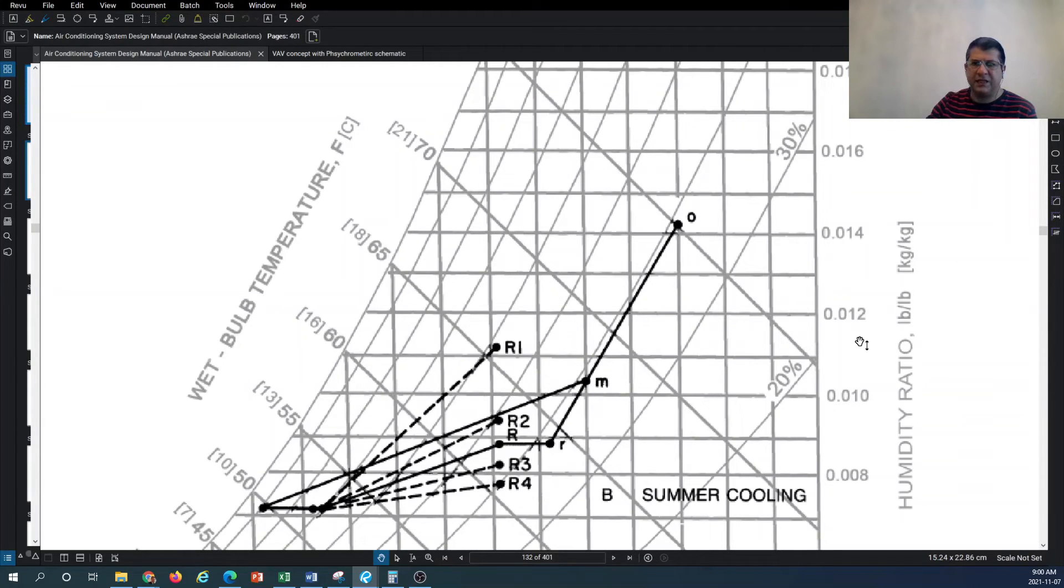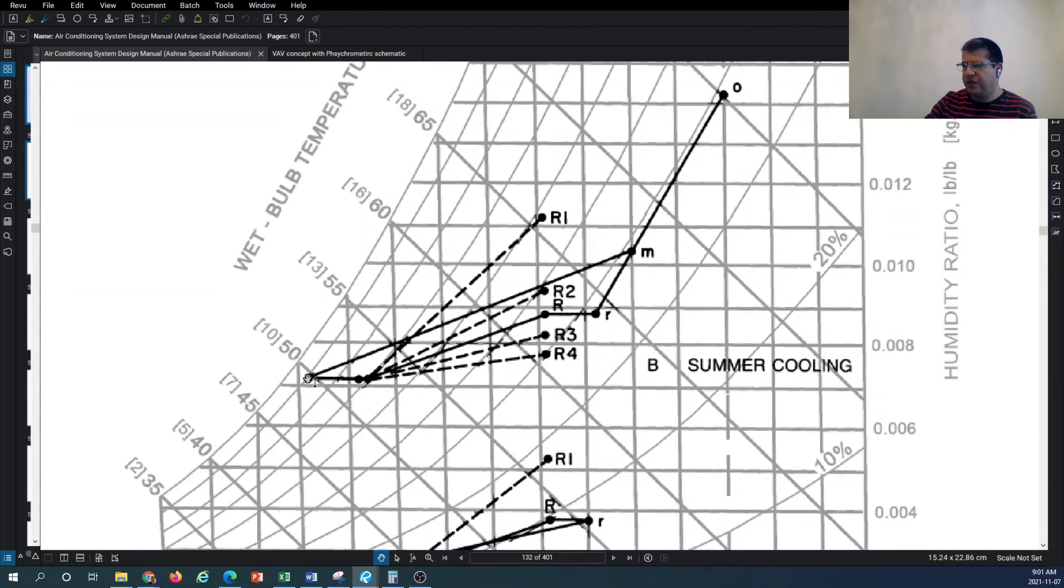If you come down, you see that you're rejecting the humidity from this point on to the point where we reject the heat from the air stream through the cooling coil. Then this passes through the supply fan, gains some more heat, and then the air is distributed to the rooms where it gains the heat, and the cycle is continuous.